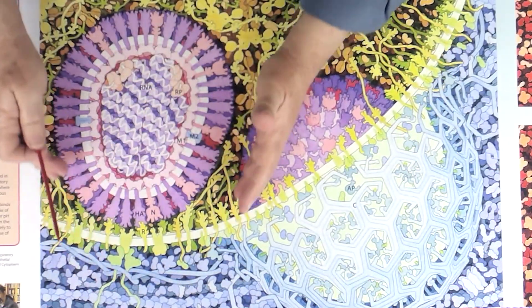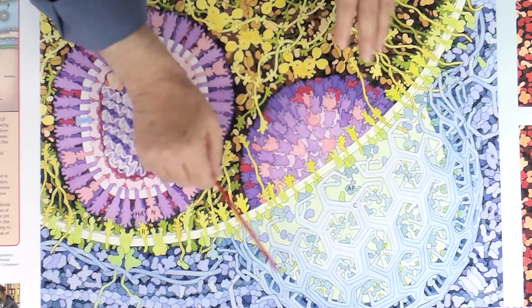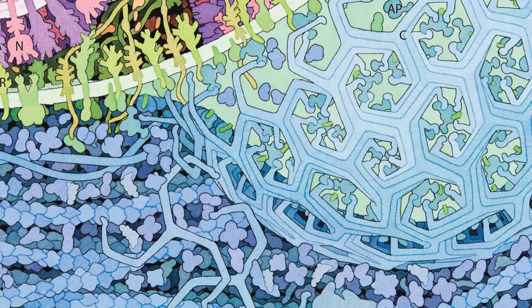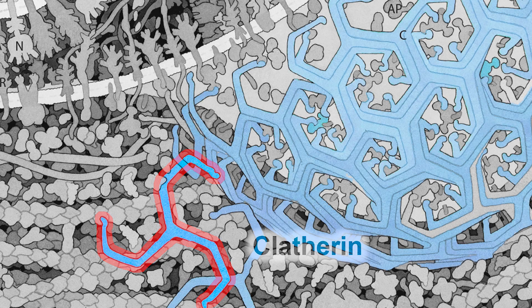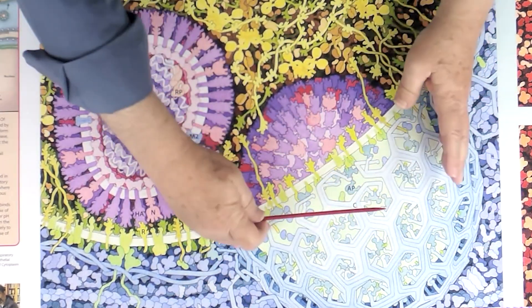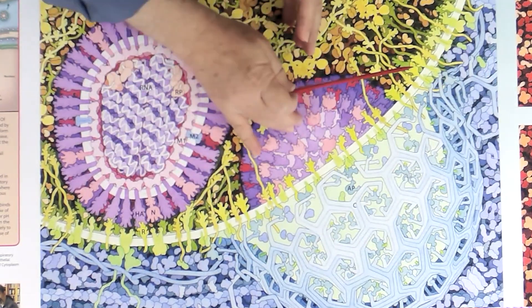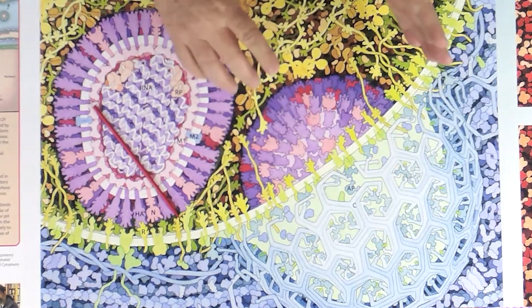Receptor-mediated endocytosis: the cell actually actively engulfs this thing that's bothering it on the outside. There's a protein inside this cytoplasm called clathrin. Here's one subunit of clathrin — you can see it has three legs, referred to as a triskelion-type shape. These individual clathrin subunits assemble spontaneously into this geodesic dome-like structure that mechanically pulls a little piece of membrane into the cell, in this case pulling the virus into the cell, creating a little bubble of membrane inside the cytoplasm, which we call an endosome.